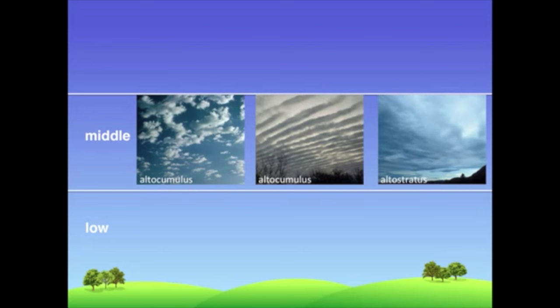Altostratus clouds are also found at mid-levels. They are usually bluish gray in color and cover most of the sky. They might be thin enough that you can see the sun or moon shine through.